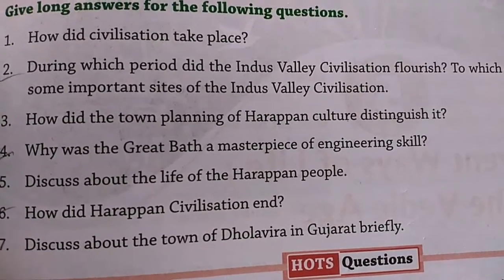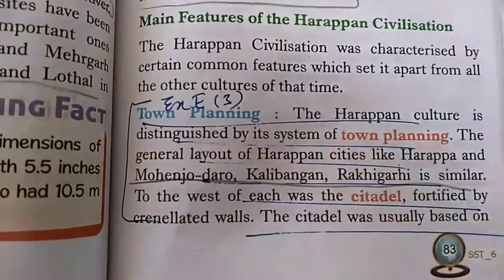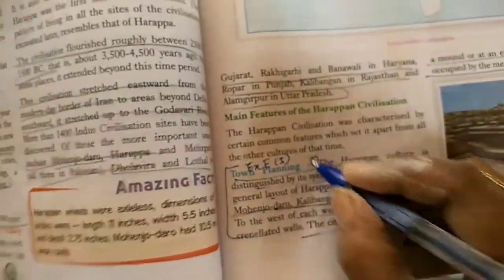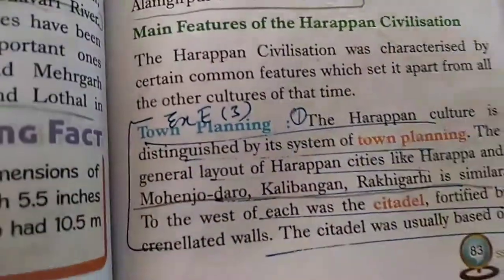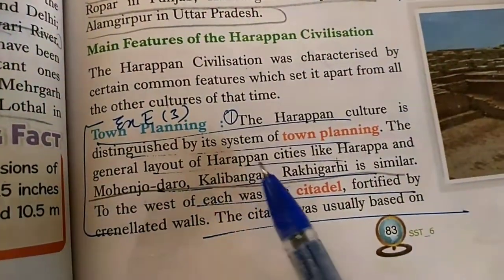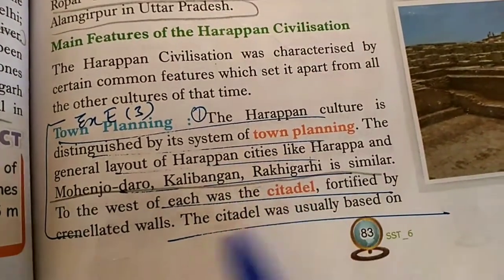Third question: how did the town planning of Harappan culture distinguish it? First point: the Harappan culture is distinguished by its system of town planning. The general layout of Harappan cities like Harappa, Mohenjo-daro, Kalibangan, and Rakhigarhi is similar.